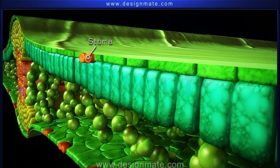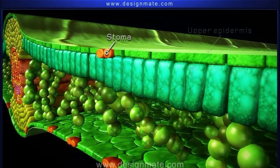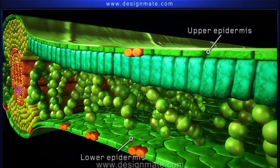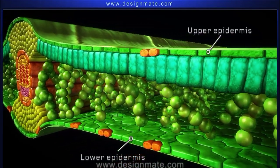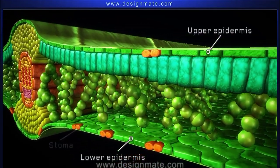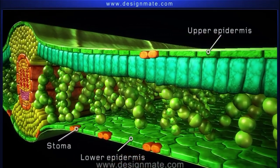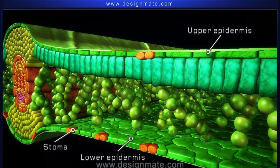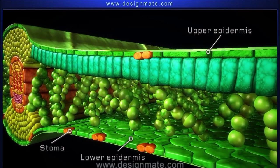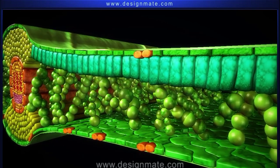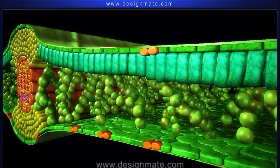Stomata, enclosed by guard cells, are found both in the upper and lower epidermis. But most stomata are found in the lower epidermis.